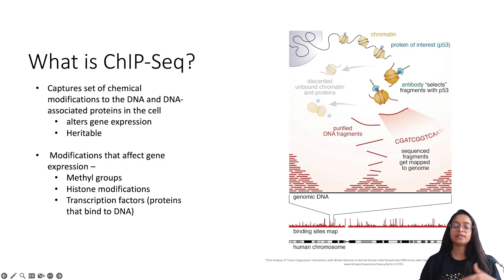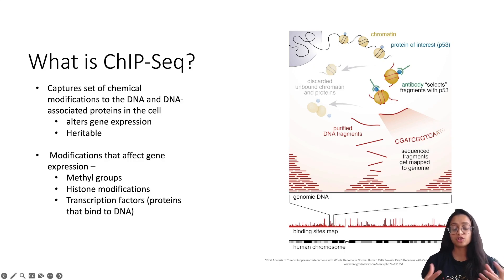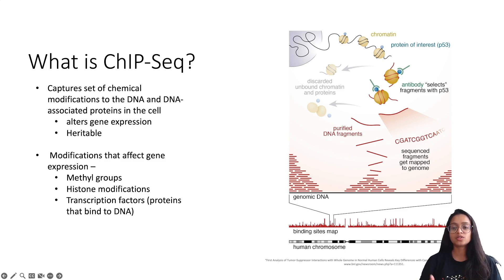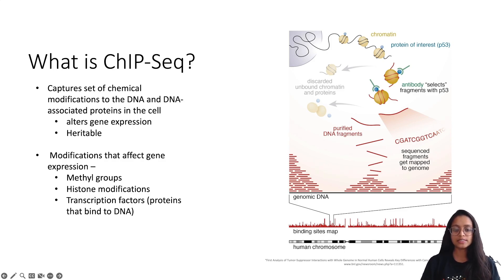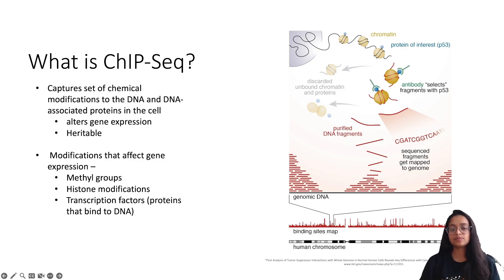ChIP-seq stands for Chromatin Immunoprecipitation Sequencing. It allows for identification and characterization of these epigenetic modifications. More importantly, it allows us to identify transcription factor binding sites, since transcription factors play an important role in regulating gene expression. It also allows us to identify patterns of histone modifications, which influence chromatin accessibility in a particular region.